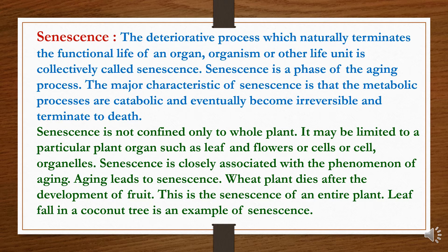The major characteristic of senescence is that the metabolic processes are catabolic and eventually become irreversible and terminate to death. Senescence is not confined only to the whole plant; it may be limited to a particular plant organ such as leaves and flowers, or cells or organelles. Senescence is closely associated with the phenomenon of aging. Aging leads to senescence. A wheat plant dies after the development of fruit — this is the senescence of an entire plant. Leaf fall in a coconut tree is also an example of senescence.